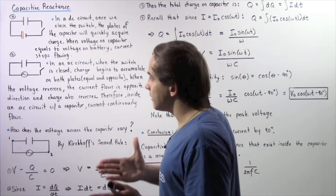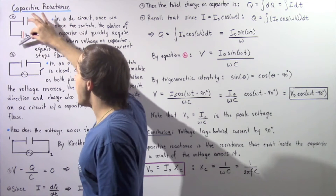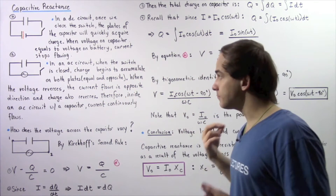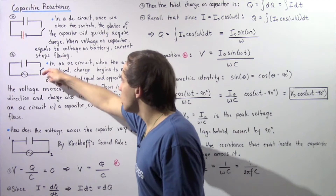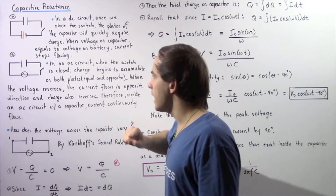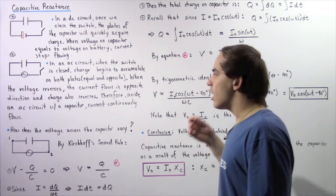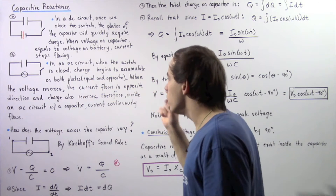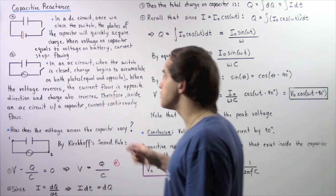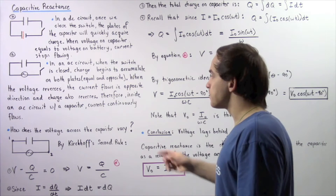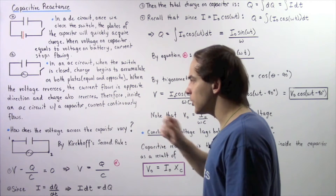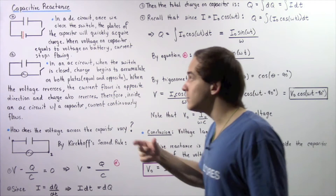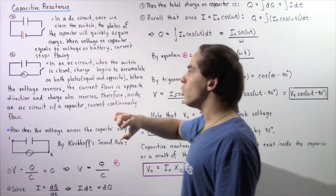Now let's compare a slightly different situation. Let's suppose we replace our battery with an alternating current source — a voltage source that continually changes. In an AC circuit, when we close the switch, charge begins to accumulate on both plates, so we have equal and opposite charge. When the voltage inside our alternating current source reverses, the current inside the wire will also flow in the opposite direction, meaning the charge on the plates will also reverse. Therefore, inside an AC circuit with a capacitor, the current will continuously flow because the voltage across the plates will continually change.